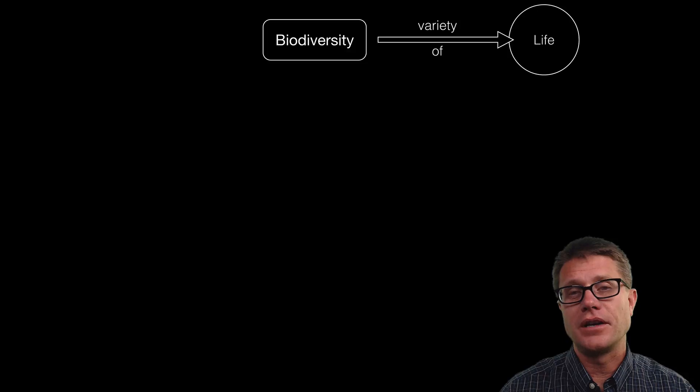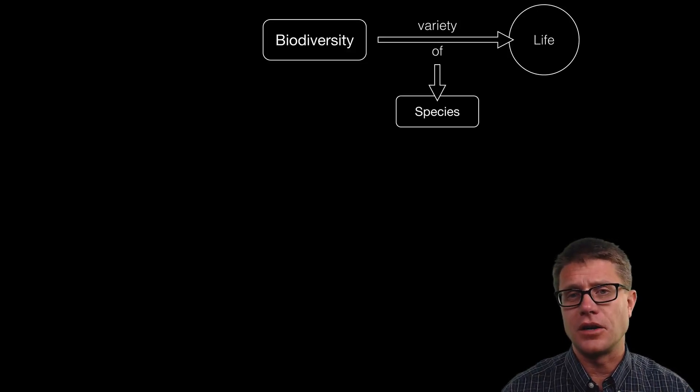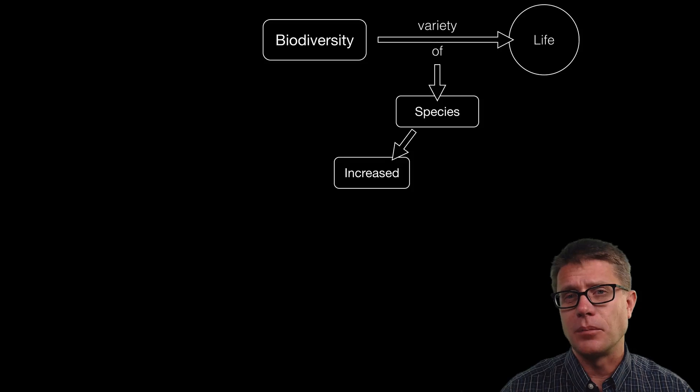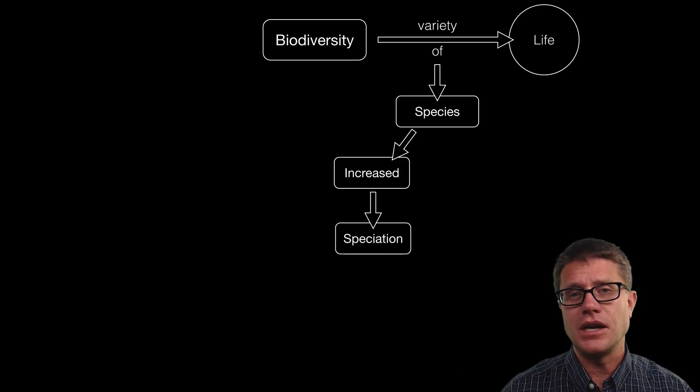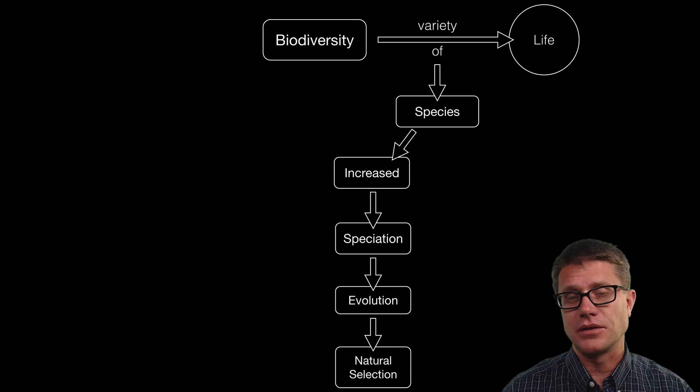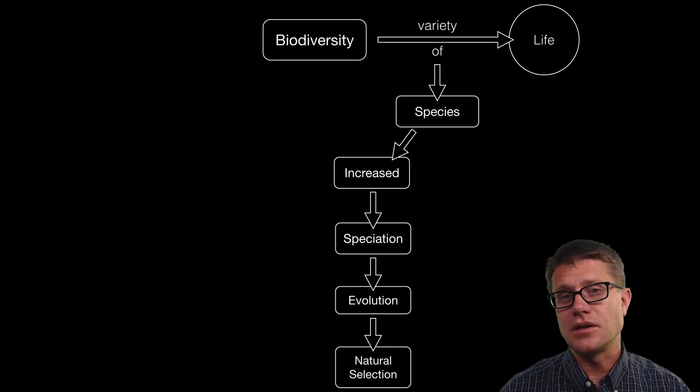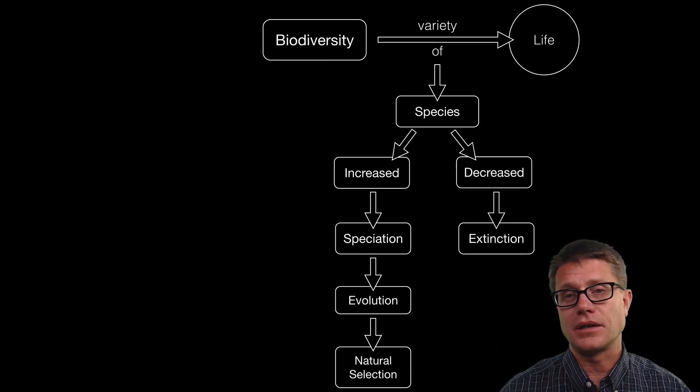Biodiversity is a measure of the variety of life on our planet. One way to measure that is the variety of species on our planet. How do we increase the number of species? We do that through speciation. The mechanism by which that occurs is evolution by natural selection. Now how do we decrease the number of species? That is through extinction.